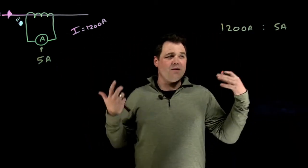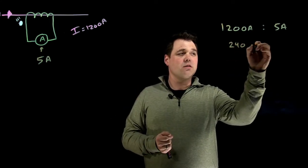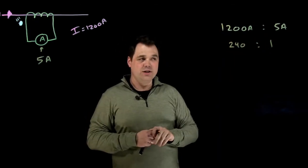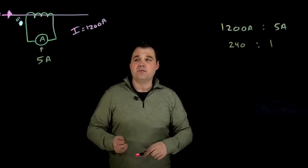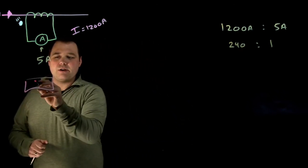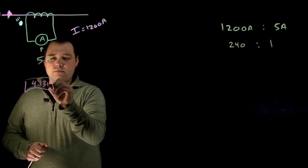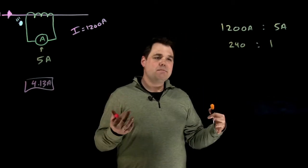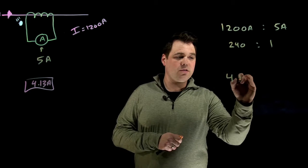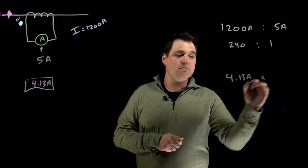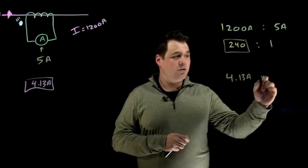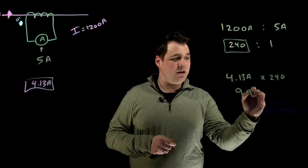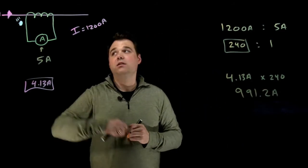Now, that would be if we do break down the math, that's a 240 to one ratio. I just took 1200 divided by five, 240 to one ratio. Now let's just say, hypothetically, for our example here, my ammeter reads 4.13 amps. My ammeter is reading 4.13 amps. Well, what does that mean? Well, I'm going to take that 4.13 amps, and I'm going to multiply it by my ratio by 240. That means in this circuit, there is actually 991.2 amps flowing on the primary.